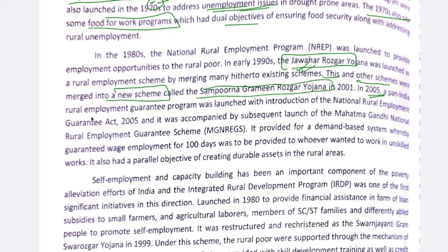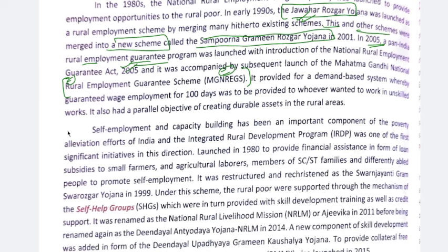In 2005, the pan-India Rural Employment Guarantee Program — the MG NREGA Act — was launched. Under this Act, the MG NREGA scheme guarantees at least 100 days of unskilled employment to rural households during the off-agriculture season. A parallel objective was the creation of durable assets in rural areas, such as construction works and drainage systems, so that while employment is provided, community assets are also created.